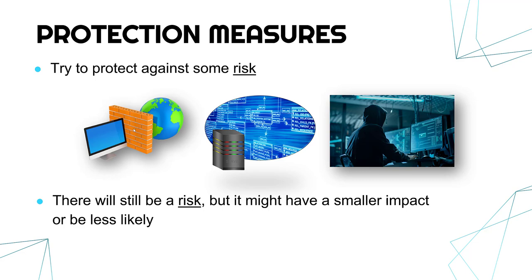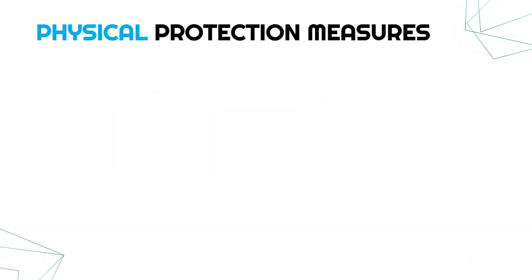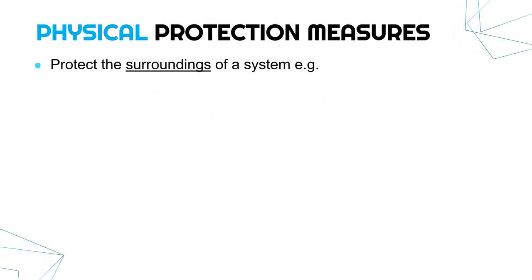You want to have several protection measures and several layers of security in case one of them fails. Now, physical protection measures are a particular category — these are ones which protect the surroundings of a system. We're talking about real life here. If you can just walk up to a computer, that's not great security. These measures try to reduce the impact of an attacker simply walking in and accessing the computers. This is about real life, not about what's on the computer itself.